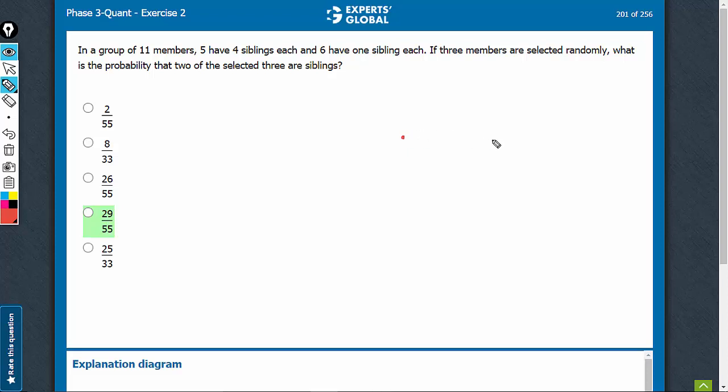5 have 4 siblings each. So, something like this. There are 5 people, everybody having 4 siblings. Each one is sibling to the other 4 and 6 have 1 sibling each.